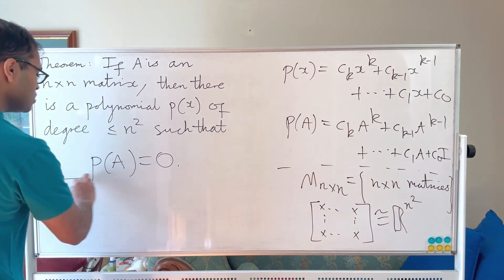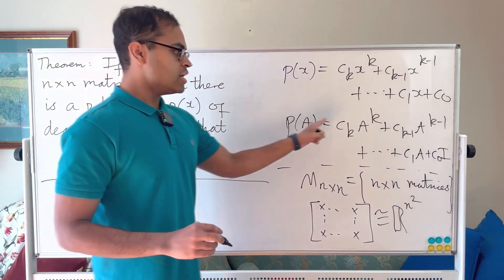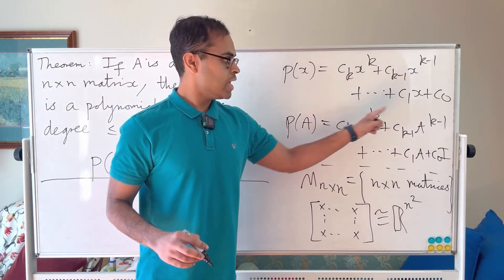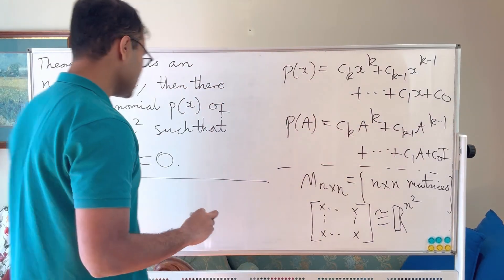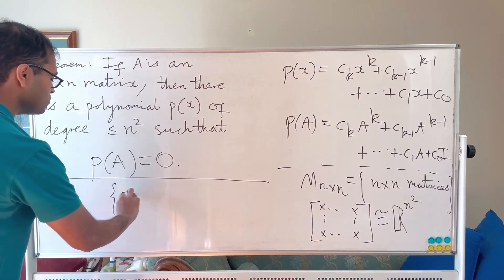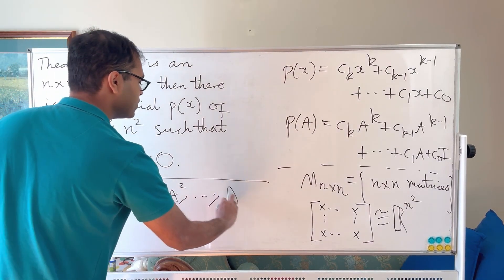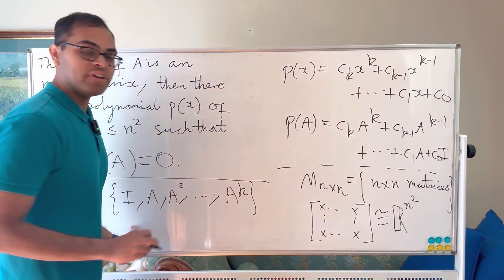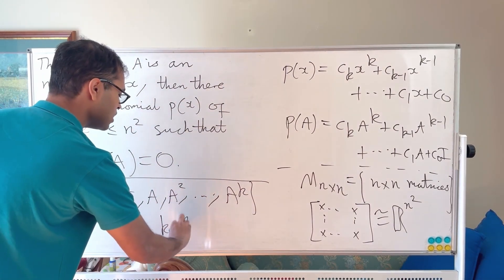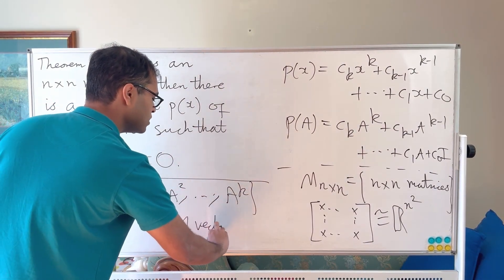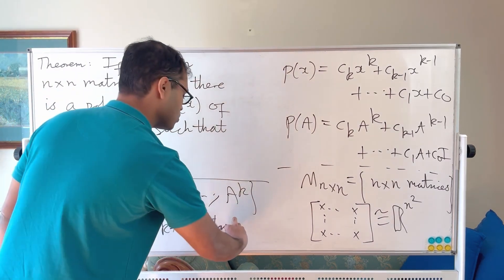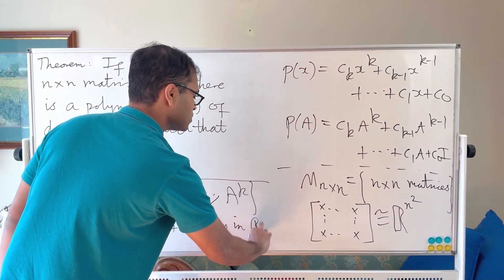So for example, if you just write this down here, if you think about all these A power k, A power k minus 1 up to the identity, you get I, A, A squared all the way up to A power k. This is a collection of k plus 1 vectors. So you have k plus 1 vectors inside R^{n²}.